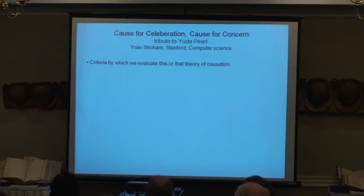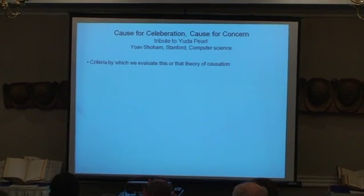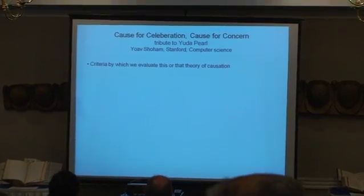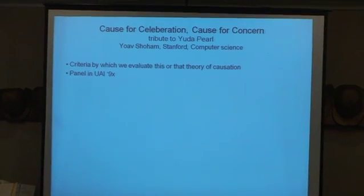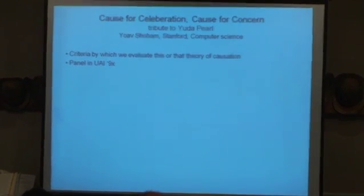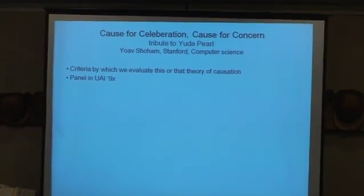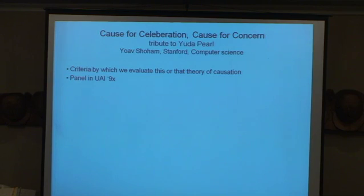What I want to speak about is a general question, almost a meta discussion: what are the criteria by which we evaluate some theory of causation? I want to start with a panel at UAI — a Conference on Uncertainty in AI. I've been to two in my life, and in one of them, Yuda grabbed me and said there's a panel on causation here, let's go. I remember presenting some criteria I thought were reasonable for a theory of causation, and another panelist — let's call him Adam Grove — said that he couldn't care less.